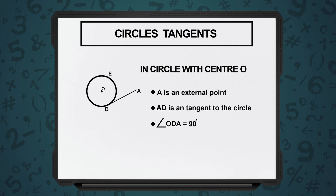If you take the measure of angle ODA — the radius segment and the tangent segment — the angle at the point where the radius segment just touches the tangent, this angle will always be 90 degrees.